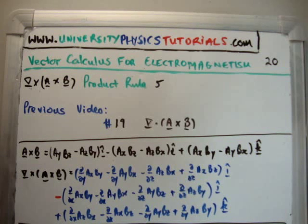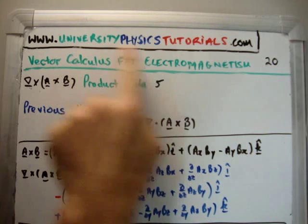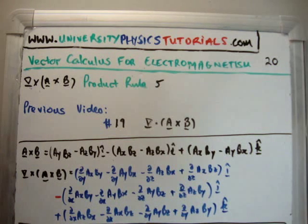In this video I'm going to continue on with my tutorial series on vector calculus for electromagnetism. This is video number 20 and I'm going to discuss product rule number 5. I'd like to draw your attention to my website universityphysicsutorials.com.